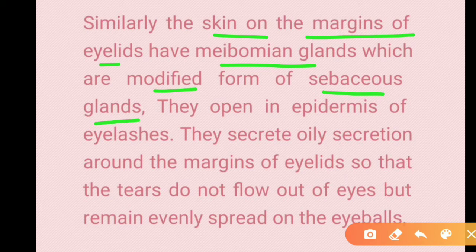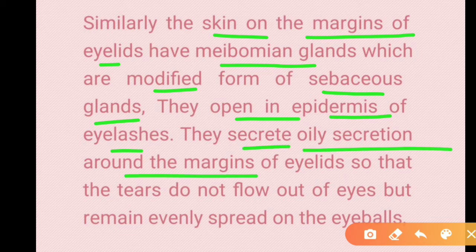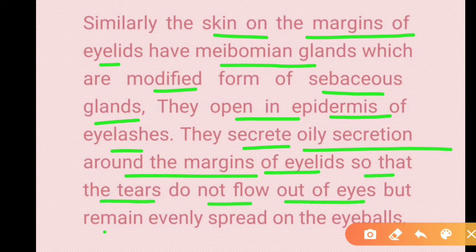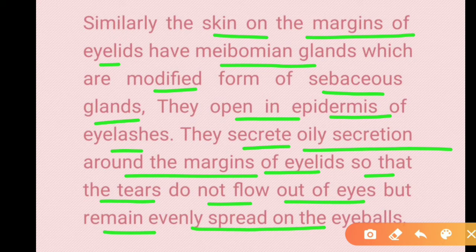Another modification of sebaceous glands is the Meibomian gland, which opens in the epidermis of eyelashes and secretes oily substances around the margins of the eyelids. This helps spread tear fluid evenly over the eye surface to keep the eye moist. Dry eyes occur when this process doesn't work properly.